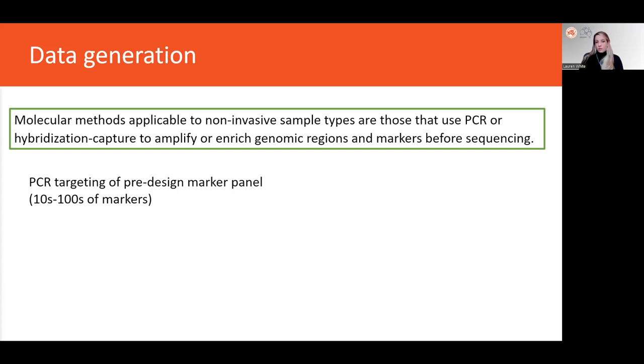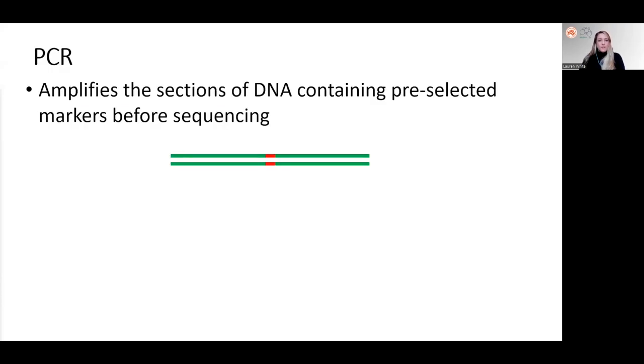So when the research question can be answered using tens to hundreds of markers, methods that use PCR to target a pre-designed panel of markers are usually the most appropriate for non-invasive samples. So these methods rely on PCR to amplify the regions of the genome surrounding the chosen markers.